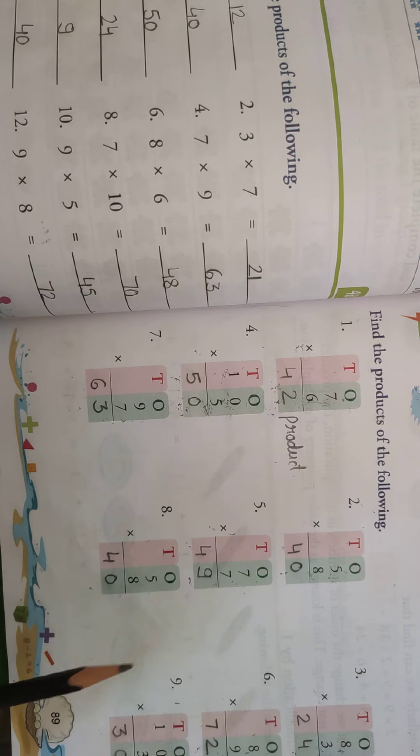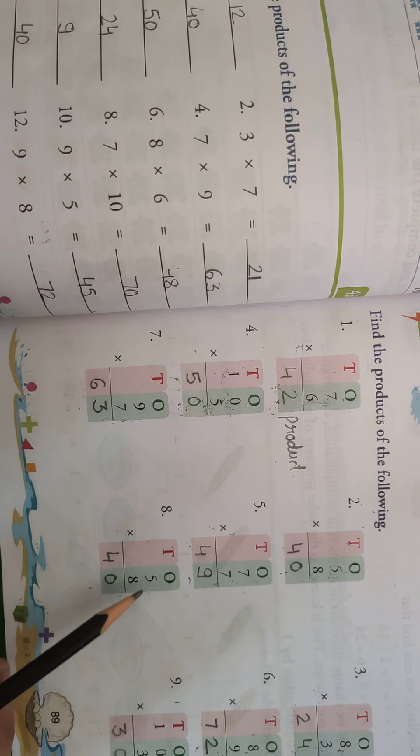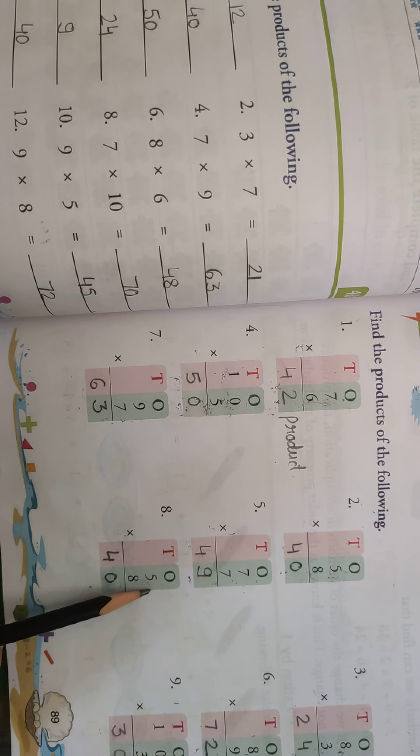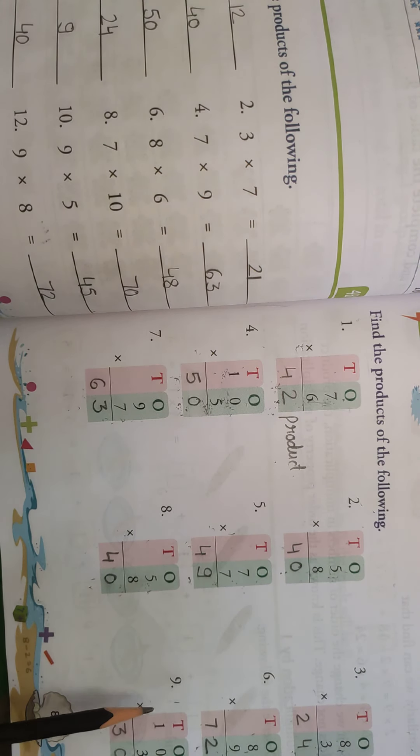Okay, then 8 5s a, aur you can say 5 8s a, hum dono tarikay se baat kar sakte hai. Okay, so what we will do, 5 multiply by 8, so 8 5s a 40.